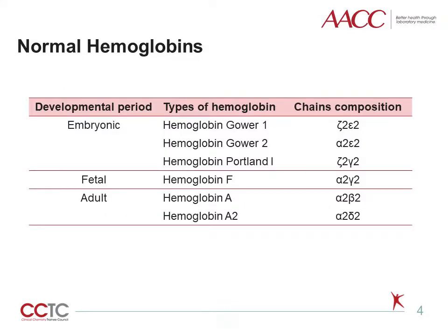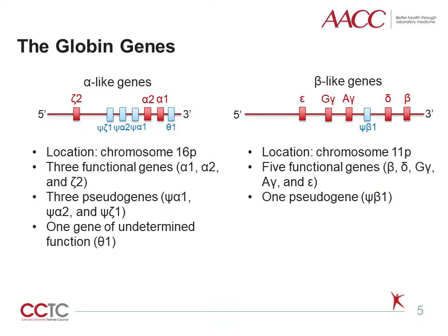In human development from embryo to adult, there are changes in the predominant normal hemoglobin. As shown in this table, hemoglobin Gower-1, Gower-2, and Portland-I are present in the embryonic period. Hemoglobin F, consisting of two alpha chains and two gamma chains, is the predominant hemoglobin in the fetal period. Hemoglobin A (alpha-2-beta-2) and hemoglobin A2 (alpha-2-delta-2) are the normal hemoglobins in adults, with hemoglobin A being the predominant component. The synthesis of hemoglobins are directed by the globin genes, which are organized into two clusters: the alpha-like gene cluster and the beta-like gene cluster.